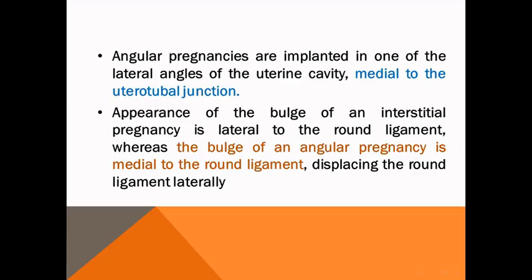We should differentiate interstitial pregnancy from angular pregnancy. Angular pregnancy implants in the lateral angle of the uterine cavity, medial to the uterotubal junction. Intraoperatively, we can differentiate them: if the pole of the pregnancy is medial to the round ligament, this is angular pregnancy; if lateral to the round ligament, this is called interstitial pregnancy.